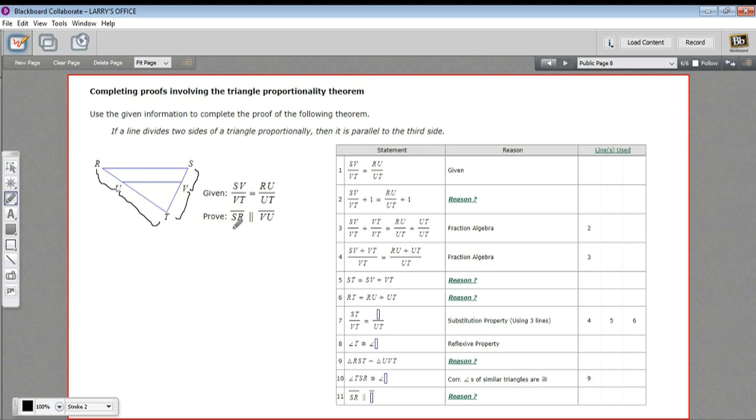And you can see that's exactly what we're trying to prove here. It says prove SR is parallel to VU. So prove this side of the triangle is parallel to this line that we cut across here. And it's giving us the fact that these sets of sides are proportional. We've got a proportion to start with. So what this proof actually does is it proves this triangle proportionality theorem.